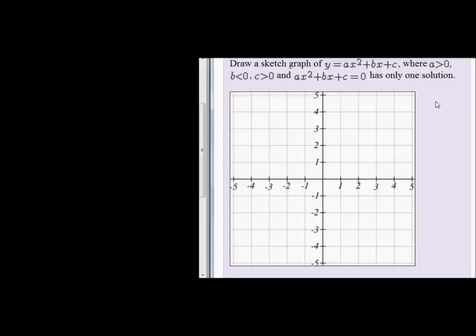Draw a sketch of the graph y equals ax squared plus bx plus c, where a is larger than 0, b is smaller than 0, c is greater than 0, and ax squared plus bx plus c equals 0 has only one solution.